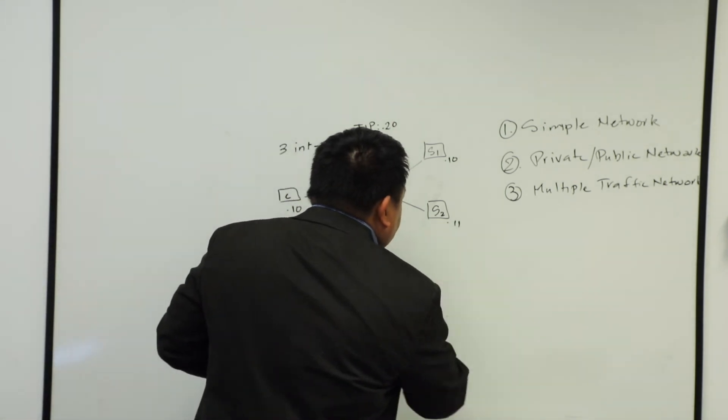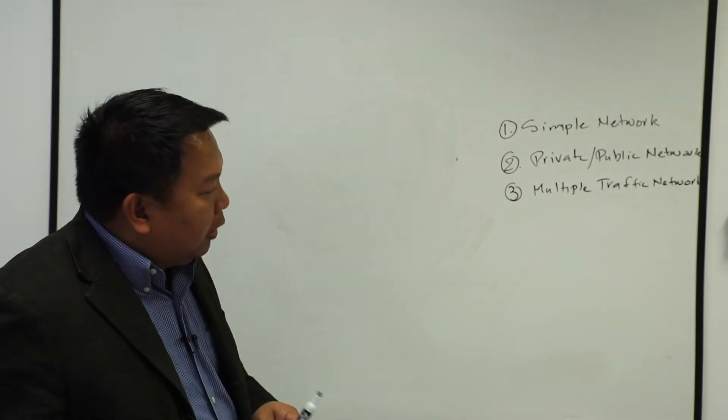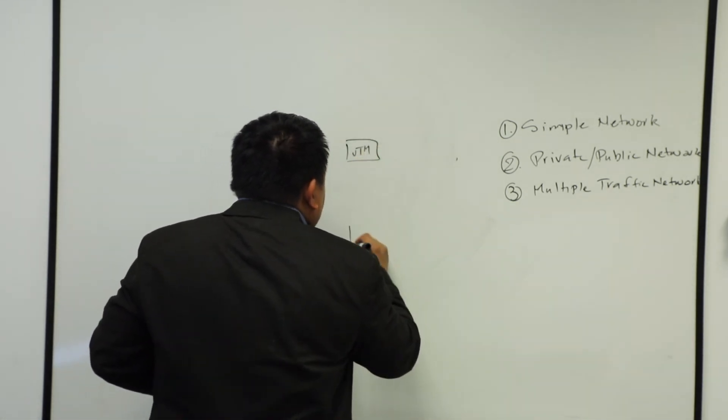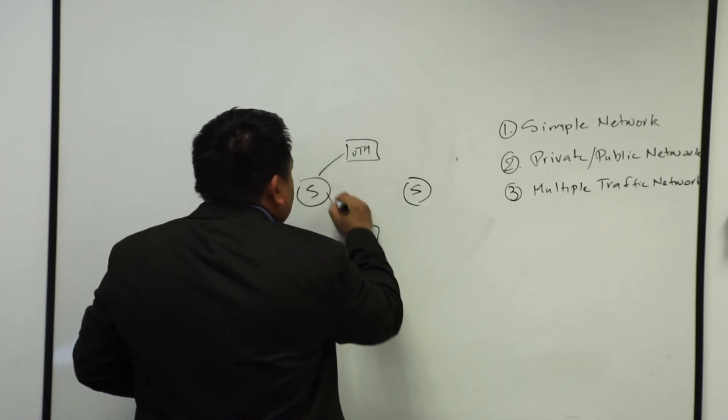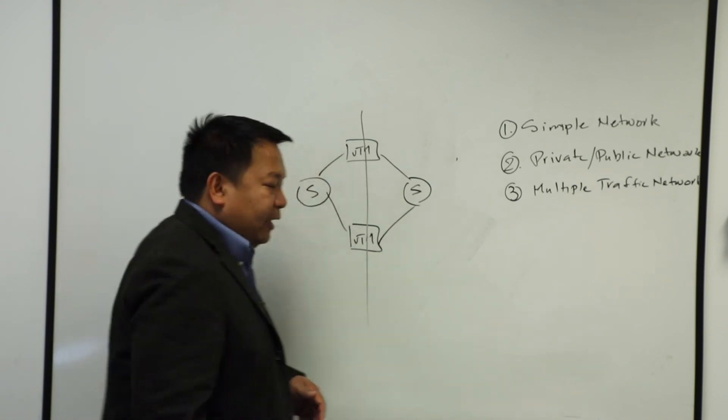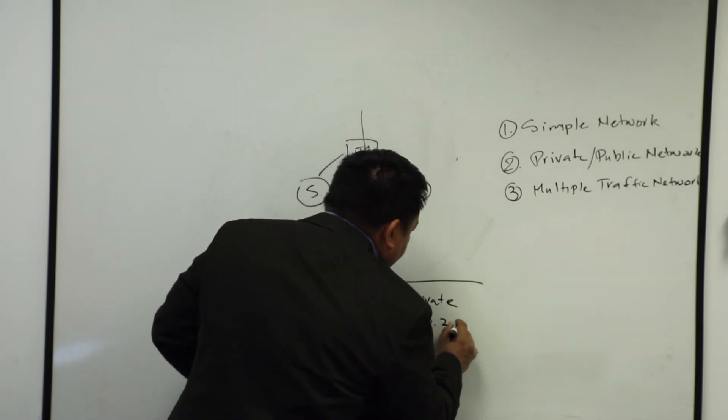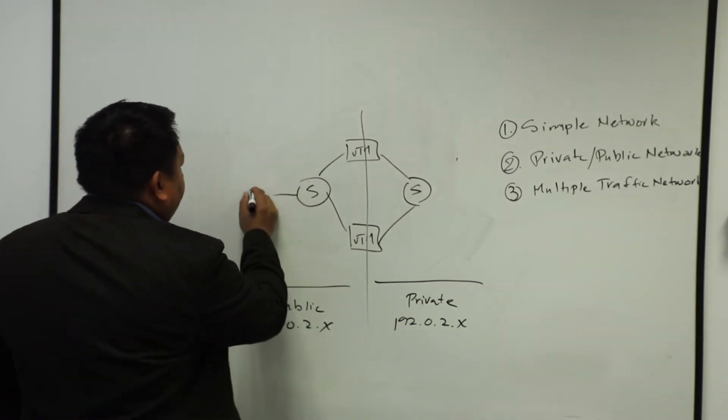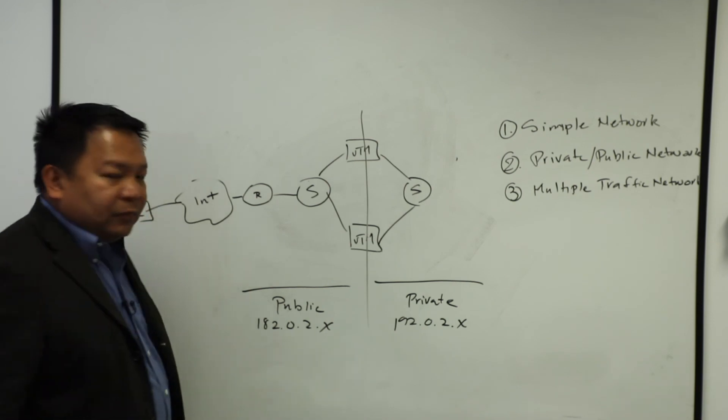So now let's move on to the more critical deployment mode, which means that you want full redundancy across. Once again, we deploy our VTM into two. And this time we have switches across. Then we're just going to address them. But also we have to divide them again. This is your private side with an address of 192.02.x. And then you have your public side, which is 182.02.x. And then probably we have some routers here to the internet and some clients as well. Okay? So that's how it looks like.